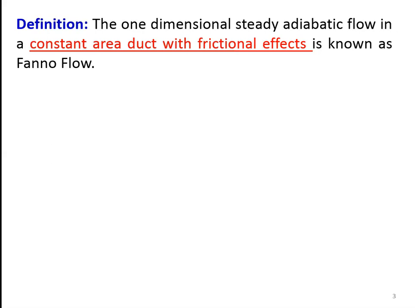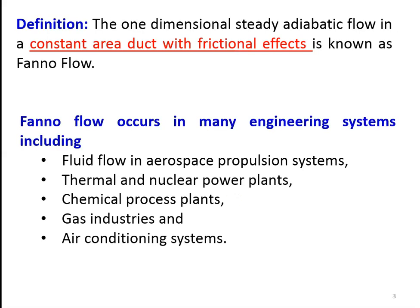There is no heat transfer across the boundary of the system. Because of friction, the properties of the fluid are changing. Fanno flow occurs in many engineering systems, including fluid flow in aerospace propulsion systems, thermal and fluid flow in thermal and nuclear power plants, chemical process plants, gas industries, and air conditioning systems. Wherever there is gas flow with frictional effect, we apply the Fanno flow concept.